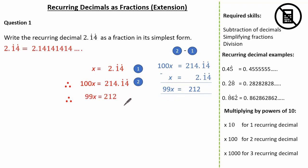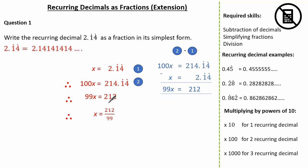Just like we've done before, let's identify x as a fraction. We simply divide by 99, so we have 212 divided by 99. Now by quick inspection, let's see if we can cancel down or simplify our fraction any further. Our numerator is even but our denominator is not, so we know we can't divide by 2. Let's see if we can divide by 3. Using our trick of adding up the digits, 2 add 1 add 2 makes 5. 5 is not a multiple of 3, so therefore we know 3 is not a factor. So 2.14 recurring as a fraction in its simplest form is 212 over 99.